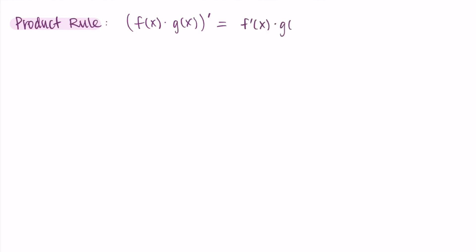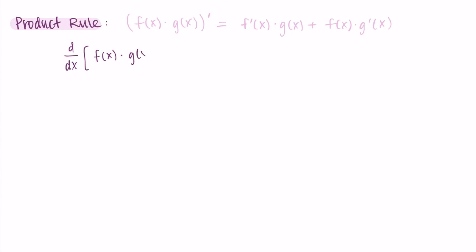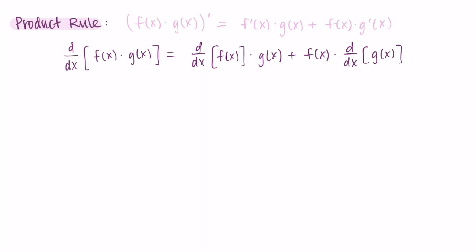Instead we use the product rule. The product rule says that we take the derivative of f times g (the regular function g) and add it to the original function f times the derivative of g. So we eventually take both derivatives — the derivative of f and the derivative of g — we just combine them together in the specific way designated by the product rule. We can also write this using the other notation: the derivative with respect to x of f times g equals the derivative of f times g, plus f times the derivative of g.